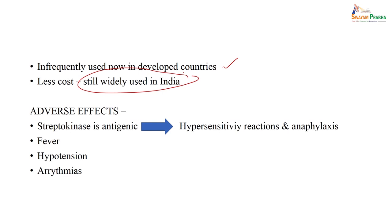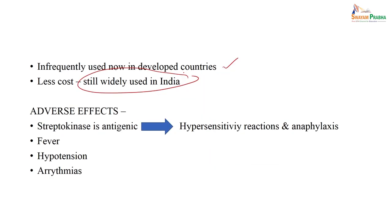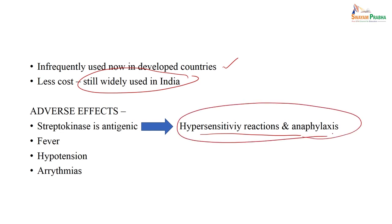What are the adverse effects of streptokinase? Since it is produced by beta-hemolytic streptococci, streptokinase is antigenic. You have to think about hypersensitivity reactions — there is a chance of anaphylactic-like reactions. A detailed allergy history must be taken. Patients may complain of fever or hypersensitivity. One also has to be careful because it can cause arrhythmia.